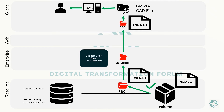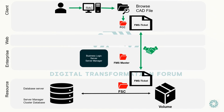Now let us consider a second scenario: without clearing the cache, if the user tries to access the same data, the request first goes to the FCC, which is the User Local File Management Client Cache. It will find the FMS ticket for that data, then the request validates this token with the FSC file management server cache system. If the data has not been modified by anyone, the FMS ticket validation will result in a successful handshake, confirming that the data within the user's FCC is latest, and without fetching it again from the FSC or volume server, it will be loaded from local cache, thereby improving the time to fetch the data.